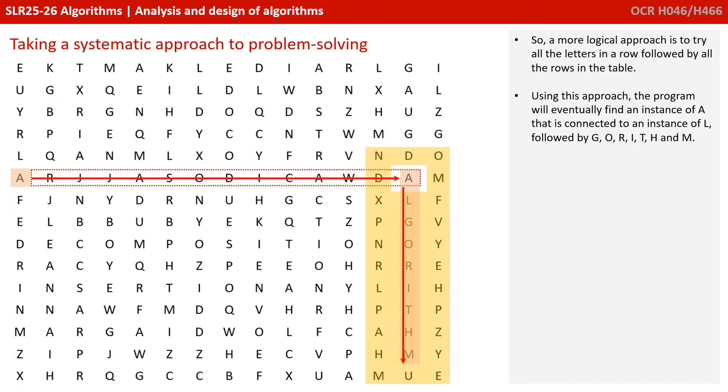Eventually, we're going to find an instance of A that, when checked, is connected to an instance of L. And then we can follow the path until we find the word algorithm. It feels like there's a very systematic and logical approach that we can take here. And therefore, using algorithmic thinking, we should be able to create an algorithm to solve this problem.